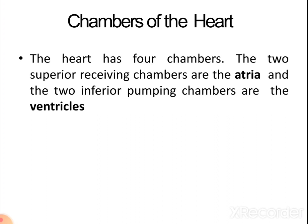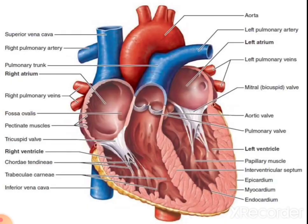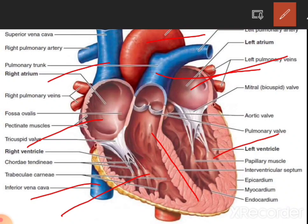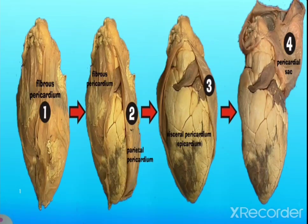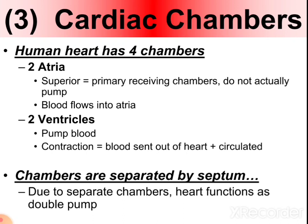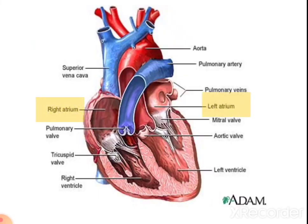The heart has four chambers: two atria, which are the receiving chambers located on the superior side, and two ventricles, which are the inferior pumping chambers. In the coronal section we can identify the right atrium, left atrium, right ventricle, left ventricle, interventricular septum, superior vena cava, inferior vena cava, aorta, and pulmonary trunk. The four chambers are separated by the septum.